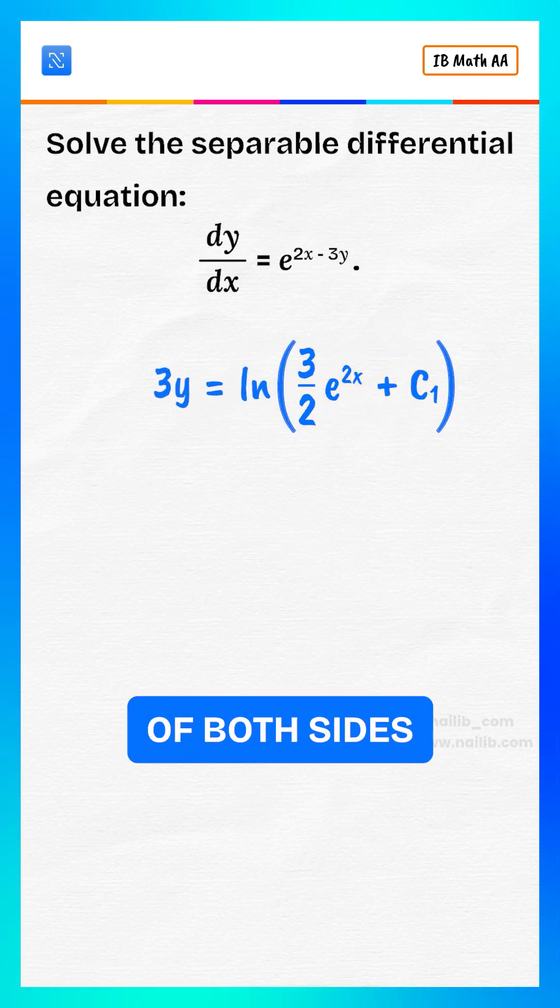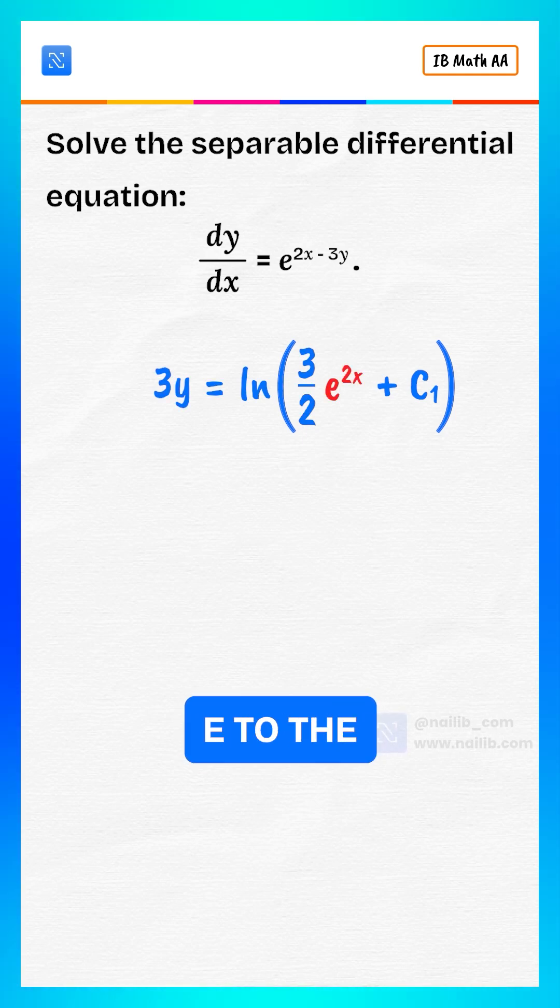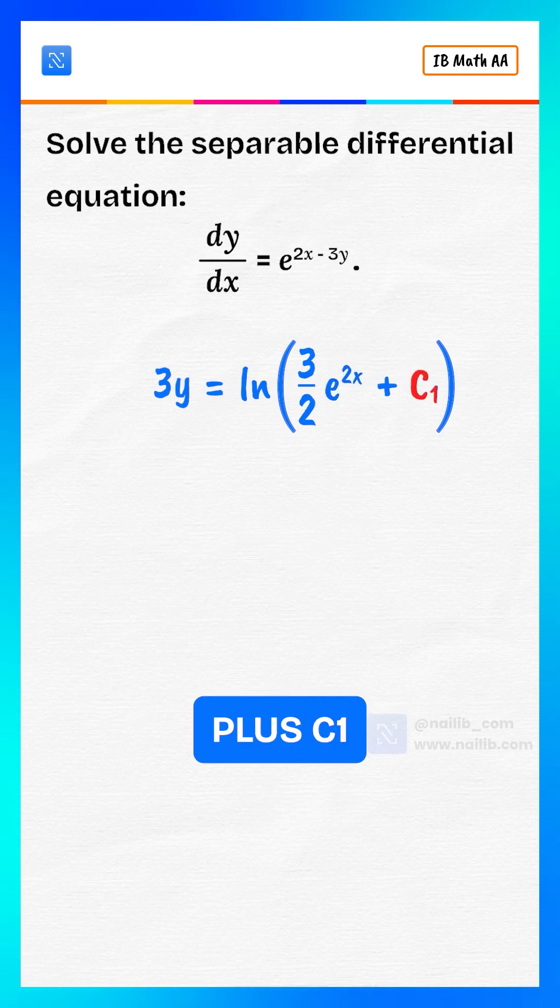Now we take natural log of both sides and we get 3y equals natural log of 3 by 2 e to the power of 2x plus c1.